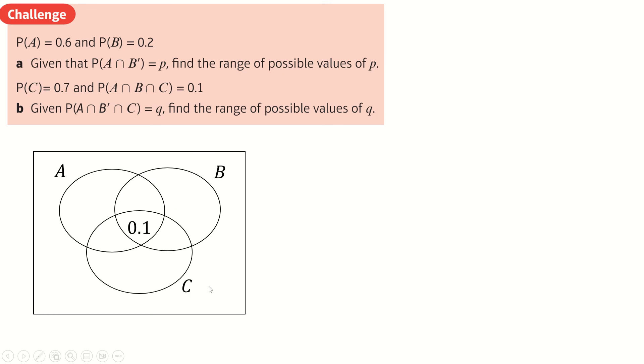Where is my third circle? There it is. That'll do. So P of A and B and C is 0.1. So that goes here. P of C is 0.7. So all of this is 0.7. But still, P of A is 0.6 and P of B is 0.2.